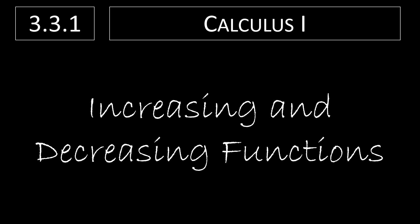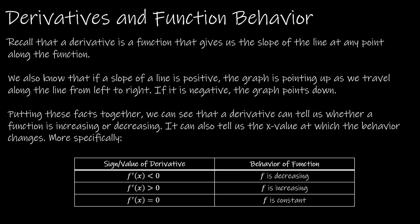In section 3.3, we're going to take a look at increasing and decreasing functions. We know that a derivative is a function that gives us the slope of a line at any point along the function. The derivative of a function is a function itself. These next few sections will tell us about whether our function is increasing or decreasing on an interval, whether it's concave up or concave down, and so on.